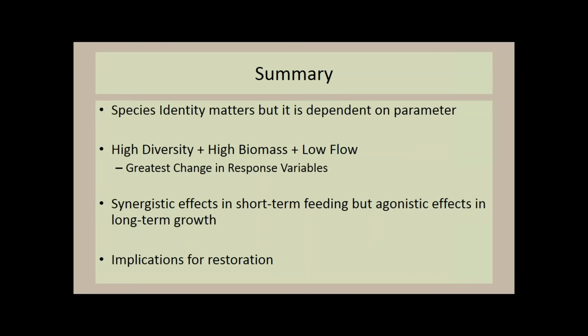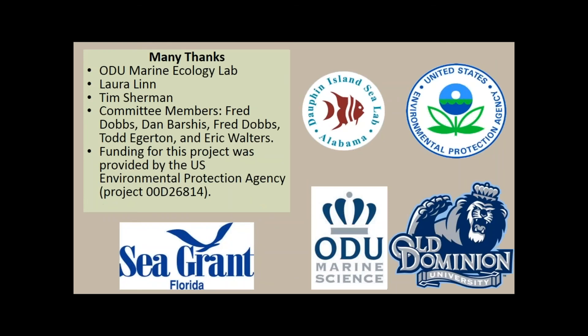In summary, species identity matters, but it's dependent on the parameter we're looking at. High diversity, high biomass, and low flow, low current velocity environments is where we see the greatest change in our response variables. And while we are seeing some synergistic effects in short-term feeding trials, some evidence that we have in other experiments show that these sponges are potentially competing for food. So while diversity may be important, there are some other emergent effects that we need to analyze before we begin these large restoration experiments.